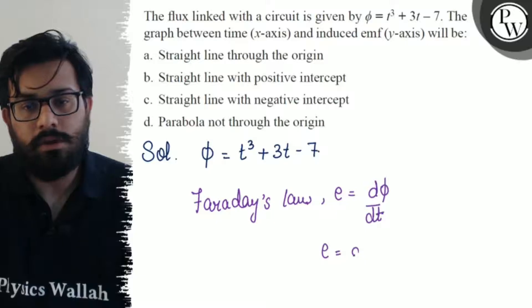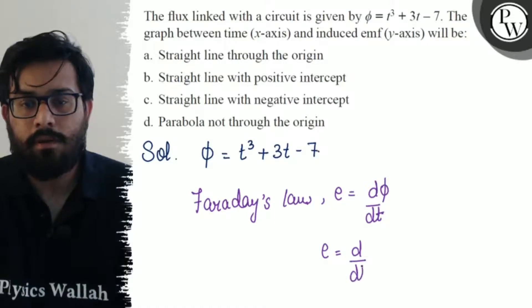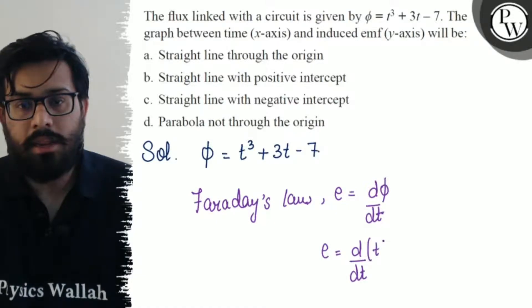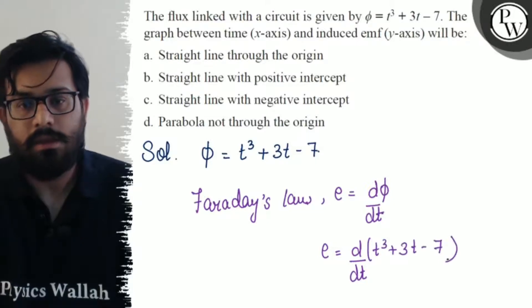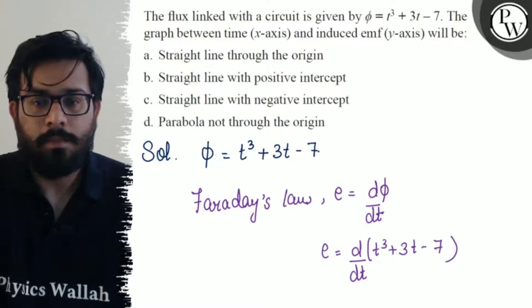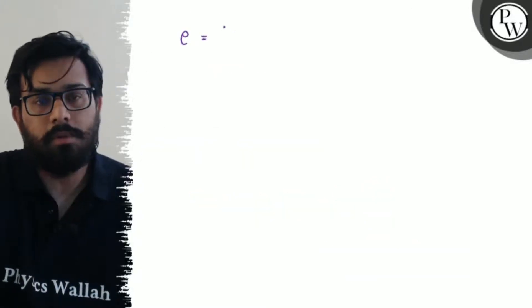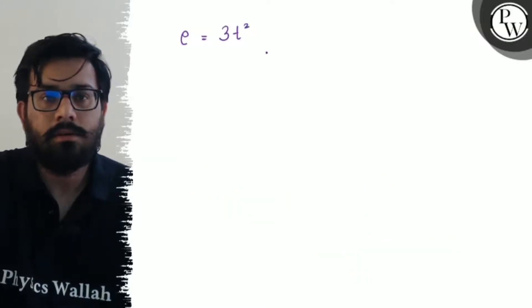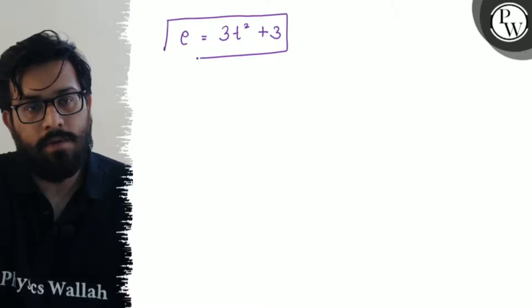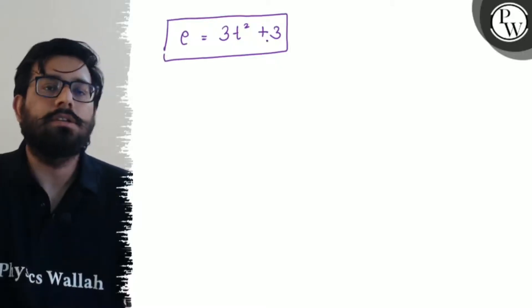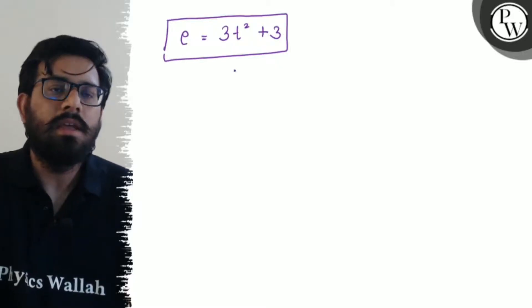Now put the value of phi, so ε equals d/dt of (t³ + 3t - 7). Just do the differentiation, so just differentiate this part. ε comes out to be 3t² plus 3.